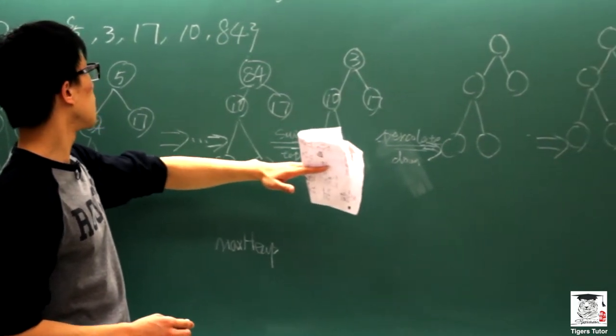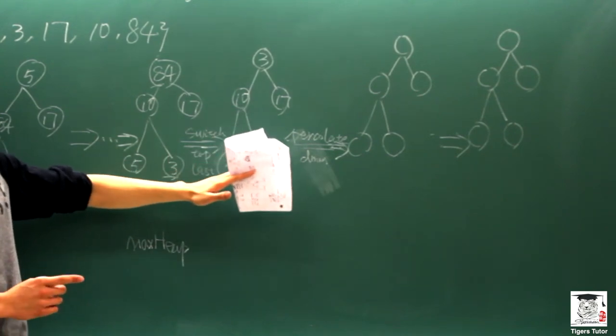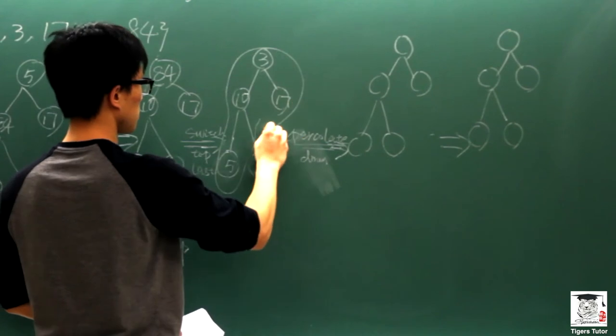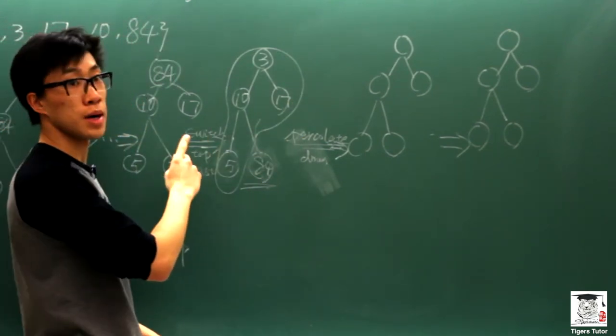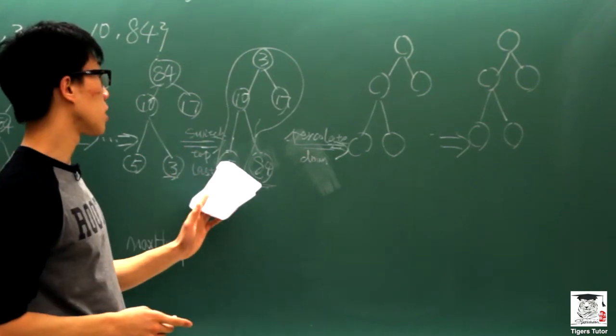Then, as is shown here, we have got our original data set separated into two parts. I will draw this out. So this part, 84, it is already sorted. However, the other part, which is still a sub-binary heap, it's not sorted.